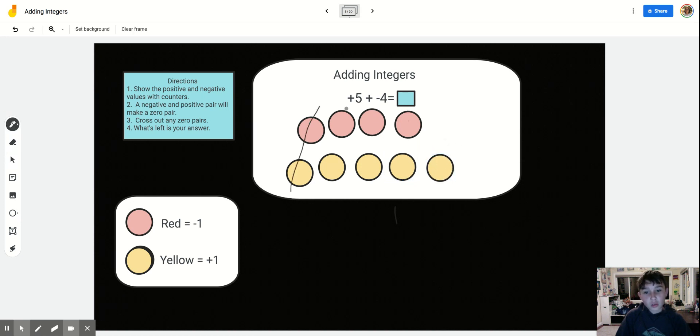And then zero pair. One zero pair. Two zero pair. Three zero pair. Four zero pair. Well, obviously we have one leftover, so the answer is going to be 1.